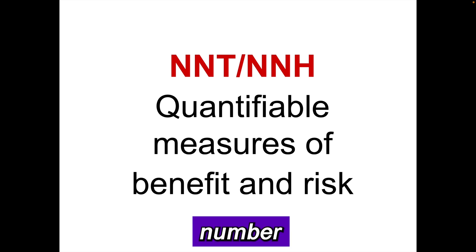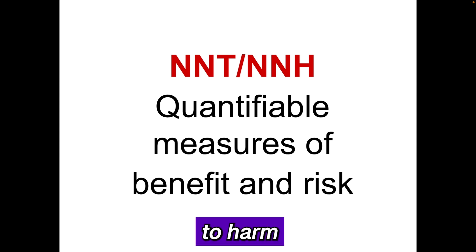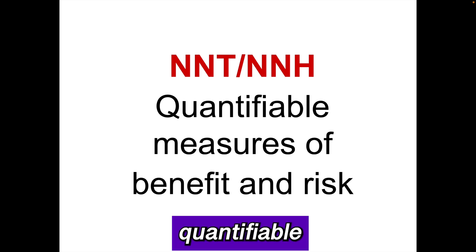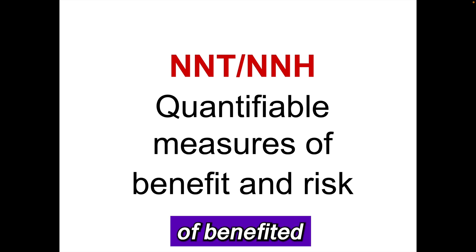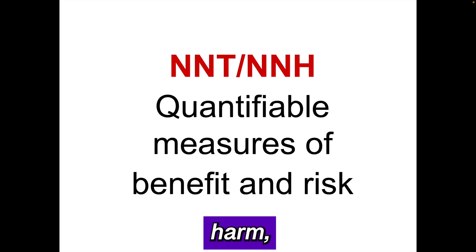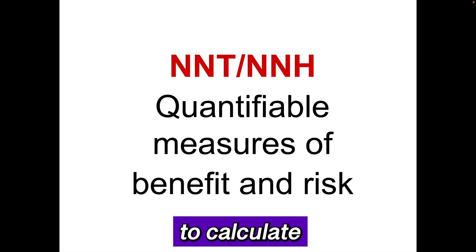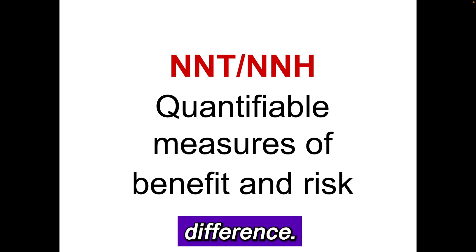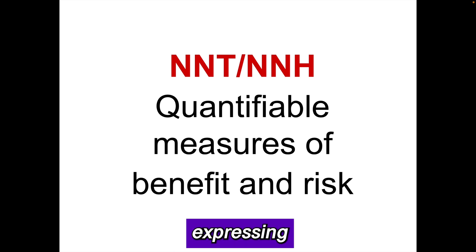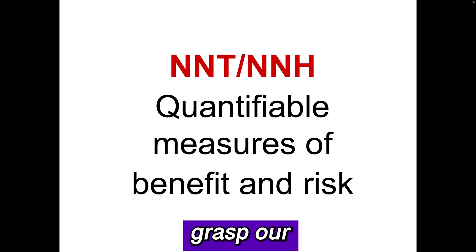In summary, number needed to treat and number needed to harm are quantifiable measures of benefit and harm. They are easy to calculate from an absolute risk difference. Practice expressing them in a sentence to better grasp their meaning.